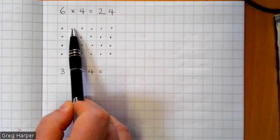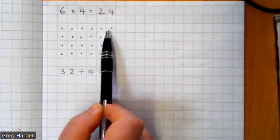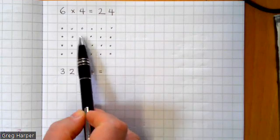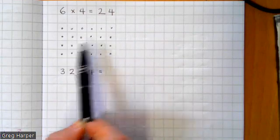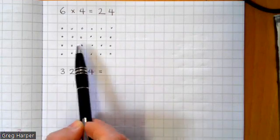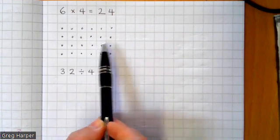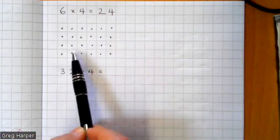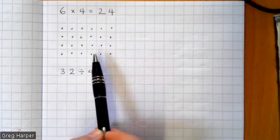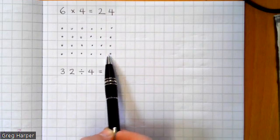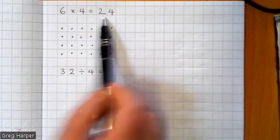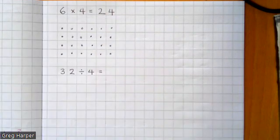Counting all the dots in the array from one through to 24, which gives the same answer — 24. Happy days.